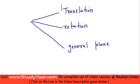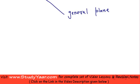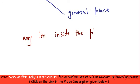First, let's understand what is translatory motion. We say a motion is translatory if any line inside the plane always has the same direction or orientation.